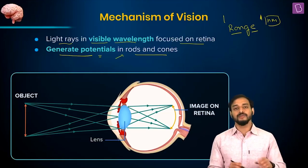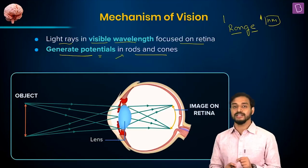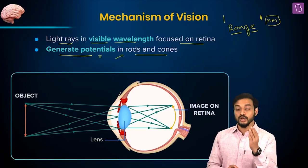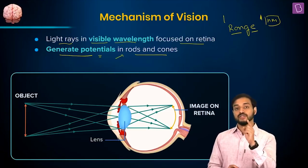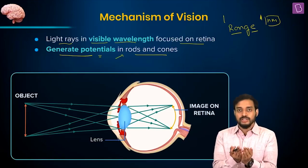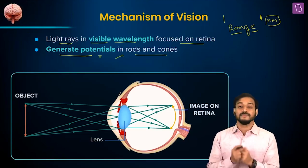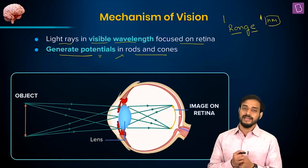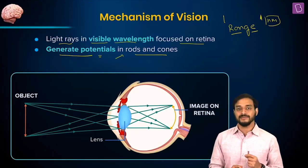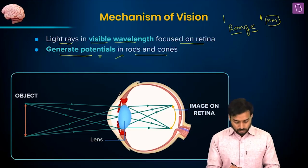In physics, when you study the human eye, you'll learn about various defects of vision — a very interesting topic. Some people cannot see objects placed far away; some people cannot read newspapers, meaning they can't see objects close to their eyes. There are various types of vision problems occurring due to various disorders, and they can be rectified with the help of lenses and spectacles. You'll understand how that works when you reach that chapter in physics.